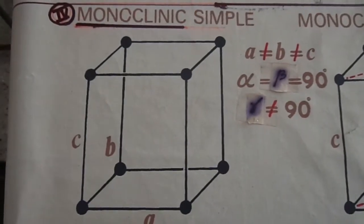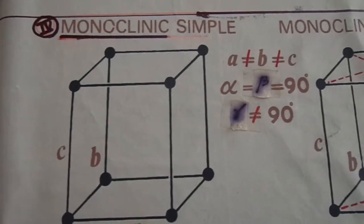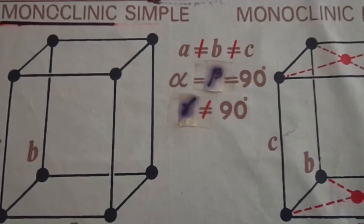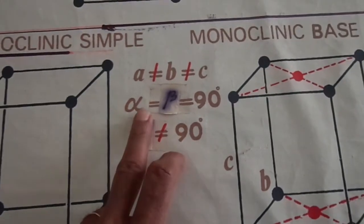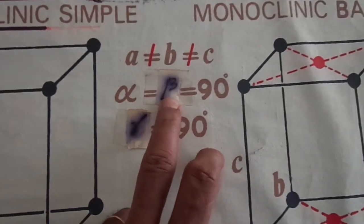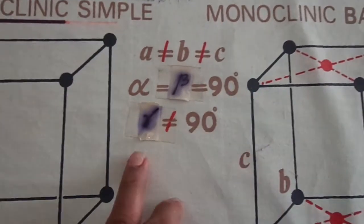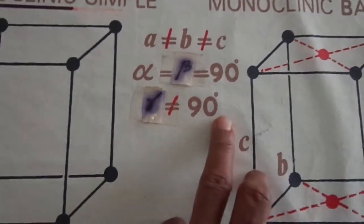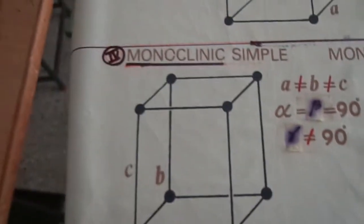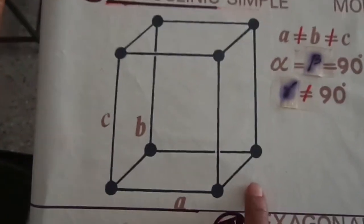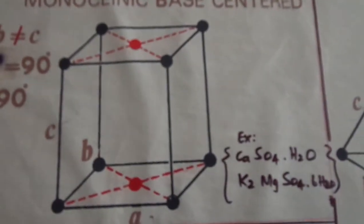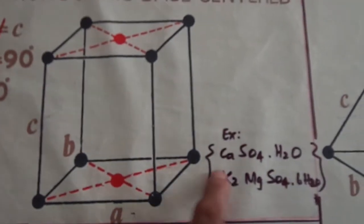Then we go to the fourth type: monoclinic structure. In monoclinic, A is not equal to B which is not equal to C, and alpha is equal to beta which is equal to 90 degrees, but gamma is not equal to 90 degrees. In this case there are two types: simple and body-centered, and examples are shown for this.